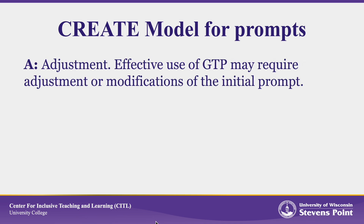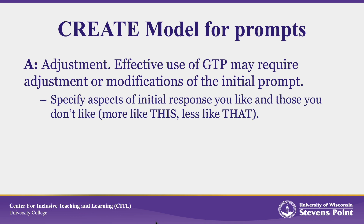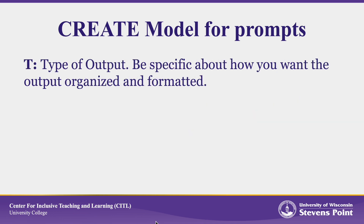Adjustment. Effective use of generative AI may require adjustment or modification of initial prompts based on the output. You can specify aspects of the initial response that you like and those that you don't like to refine the output. You can ask the AI to generate a new output with more like this and less like that, or ask it to include analogies or examples for specific points. The key here is to remember that you don't always get what you want on the first try.